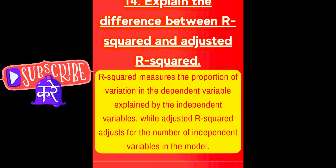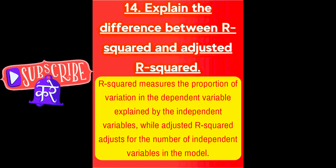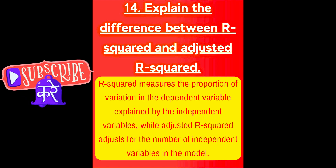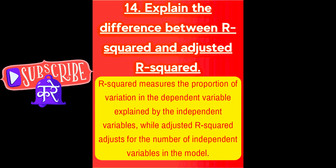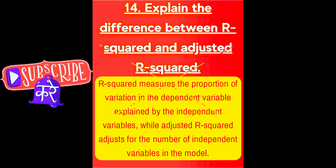Next question is, explain the difference between R-squared and adjusted R-squared. R-squared measures the proportion of variation in the dependent variable explained by the independent variables, while adjusted R-squared adjusts for the number of independent variables in the model.